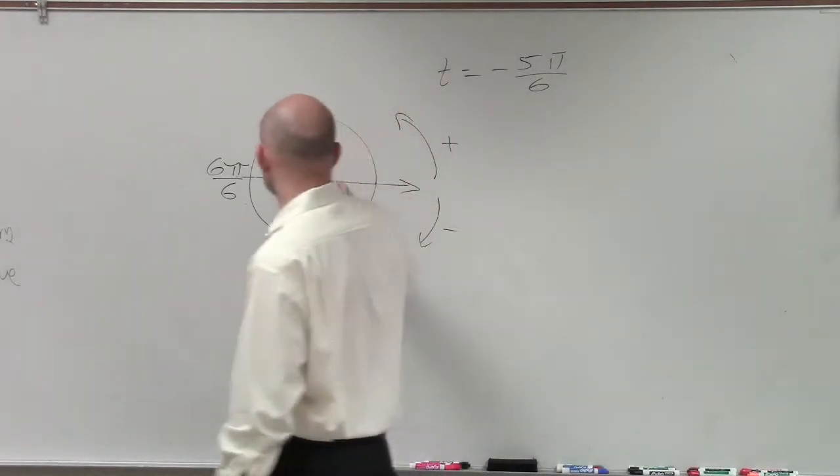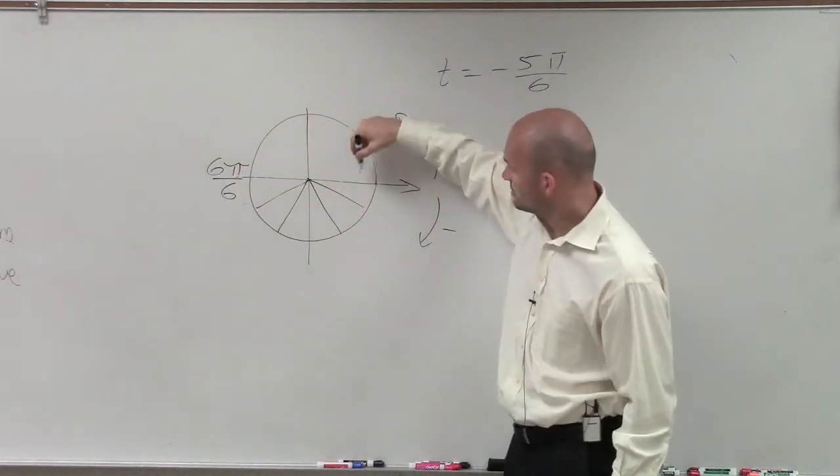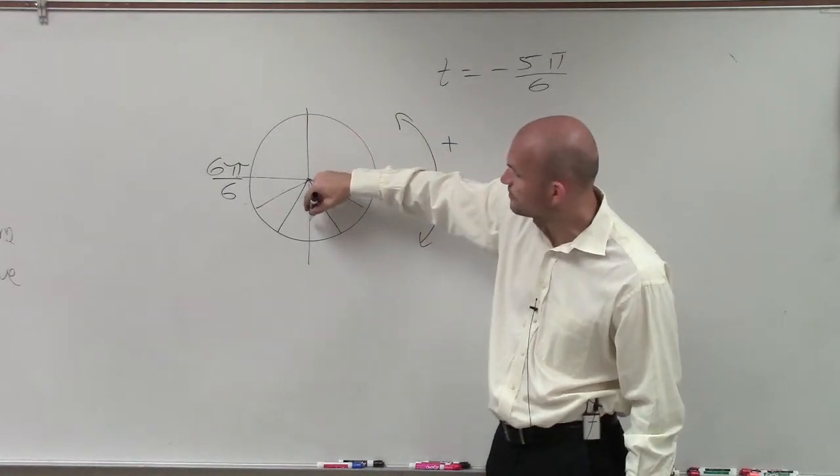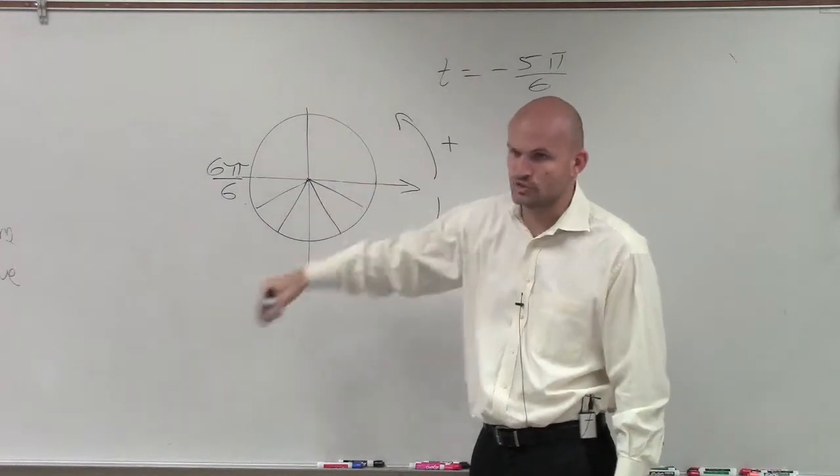Then I break this up into 6. So going in the negative direction, this would be negative pi over 6, negative 2 pi over 6, negative 3 pi over 6, negative 4 pi over 6, negative 5 pi over 6, negative 6 pi over 6, because you're going in the negative direction.